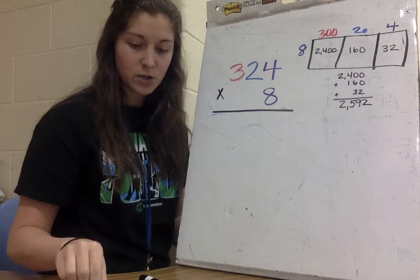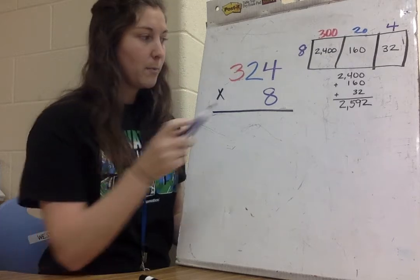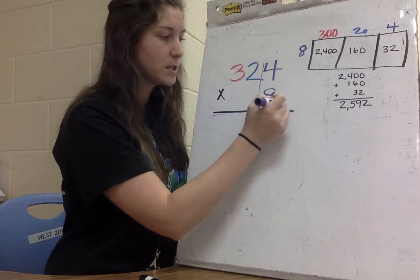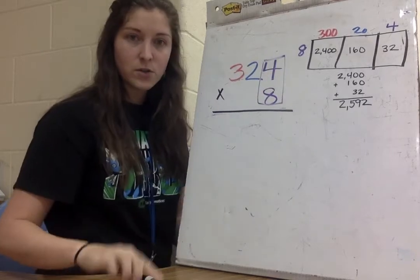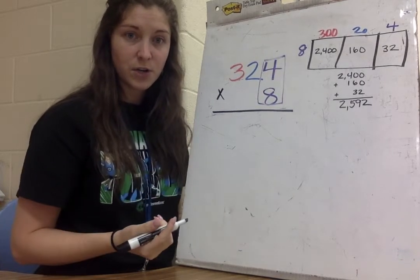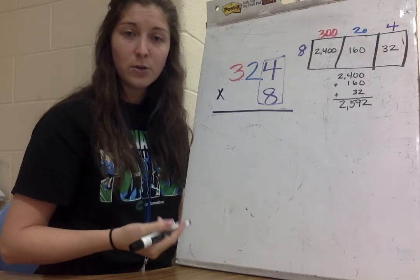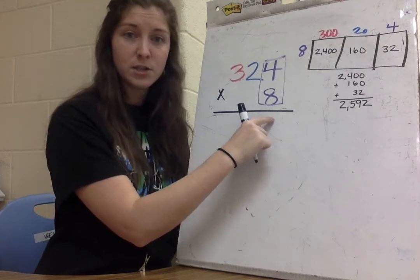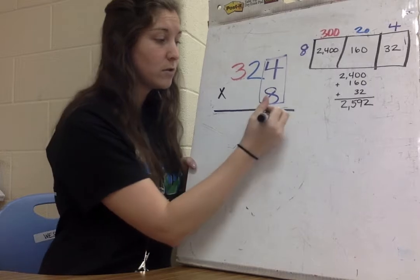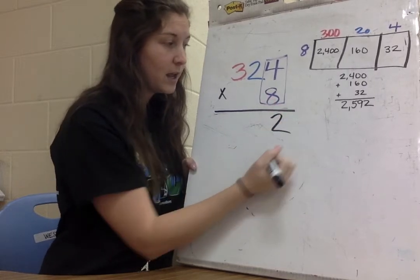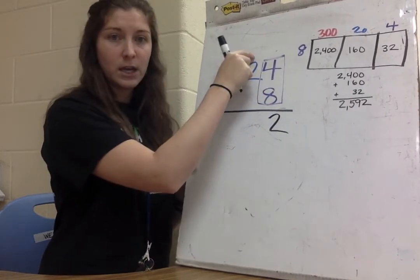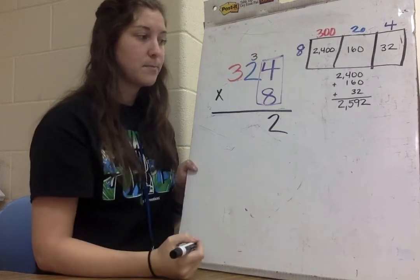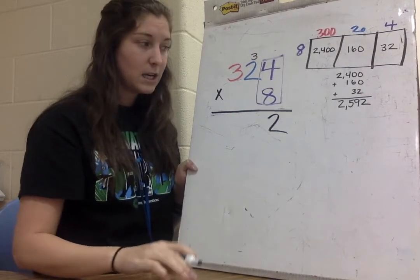The first thing I'm going to start with is my ones digit on the bottom. I'm going to go 4 times 8, and I know that 4 times 8 is 32. You may notice that's a two-digit number — I can only put my ones digit down here, so my 2 goes down and my 3 I'm going to carry up here on top of my 2.